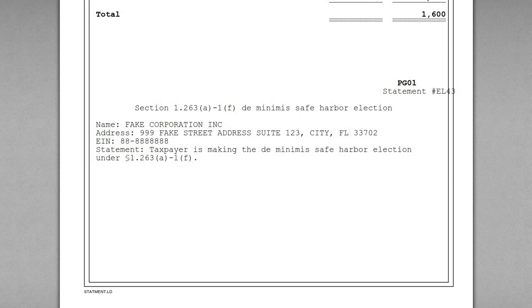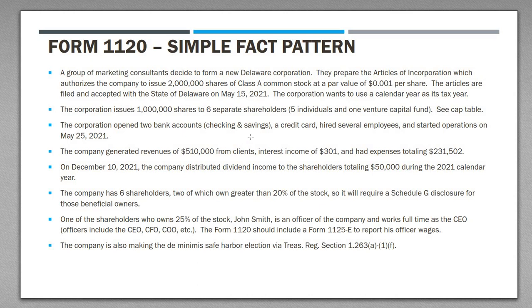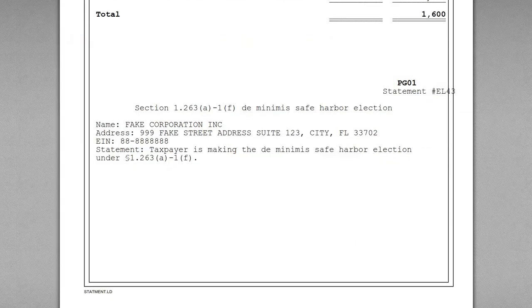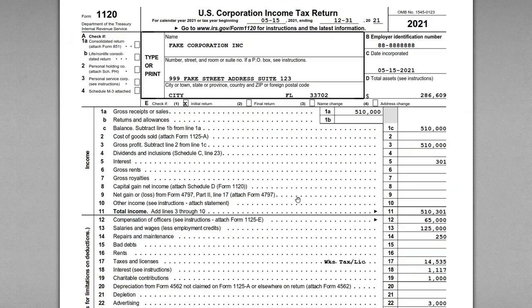That covers this tutorial for the Form 1120. It was a simple example covering the basic elements and fields that need to be completed. If you have any questions, please leave a comment below — happy to answer any I can. I look forward to seeing you again on the next tax return tutorial.